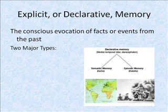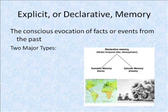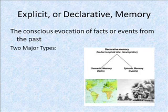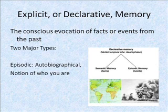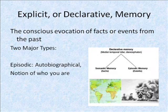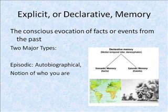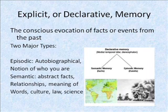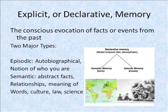The two major types of declarative memory are semantic memory, which retrieves facts, and episodic memory, which can retrieve events. In episodic memory, the information you retrieve is autobiographical, so episodic memory gives you a notion of who you are. Semantic memory, on the other hand, allows you to abstract facts, form relationships, understand the meaning of words, and have ideas about culture, law, and science.